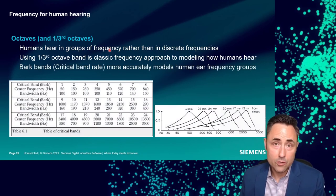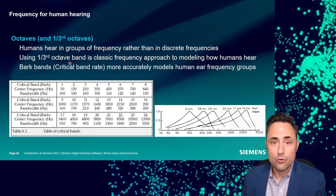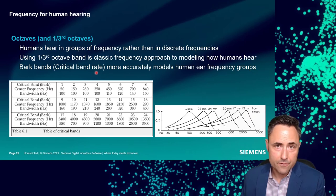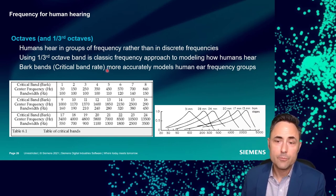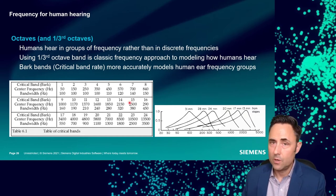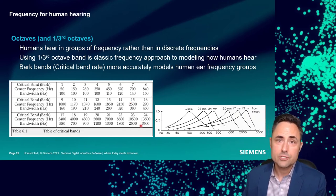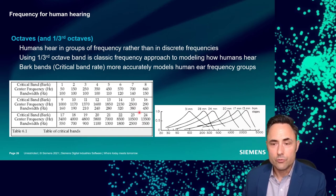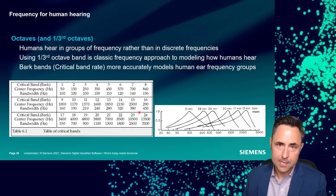There's also something called the critical band rate, or Bark bands — a more nuanced and accurate version of the one-third octave band used in sound quality applications. One-third octave bands are very close to these, but Bark bands are slightly more specific for detailed sound quality work. The principle is exactly the same: grouping frequencies the way our brain hears them.